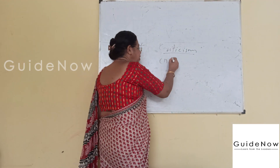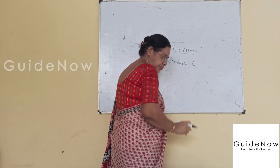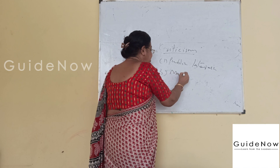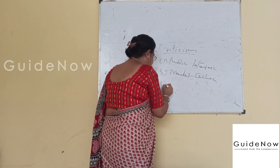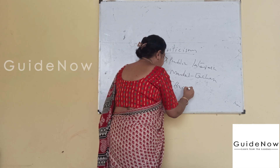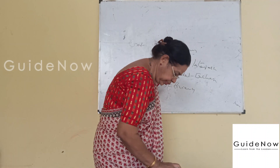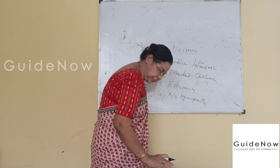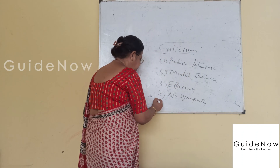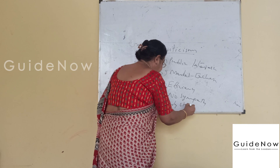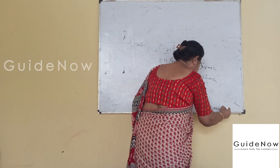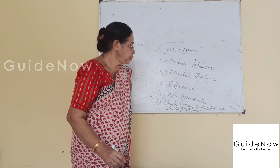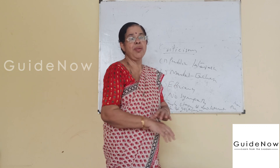The important criticisms of public choice theory are: first, public interest; second, market exchange; third, efficiency; fourth, no sympathy; fifth, early stages of development; and sixth, the role of knowledge. These are the important criticisms of public choice theory.